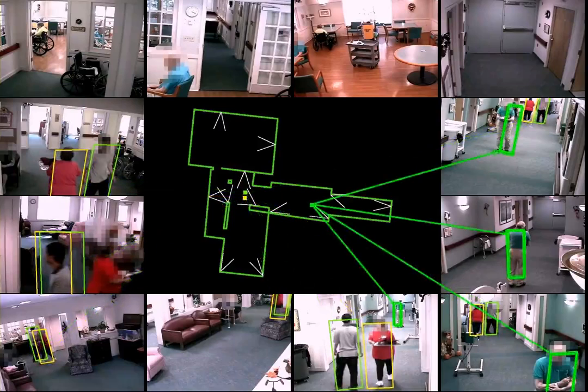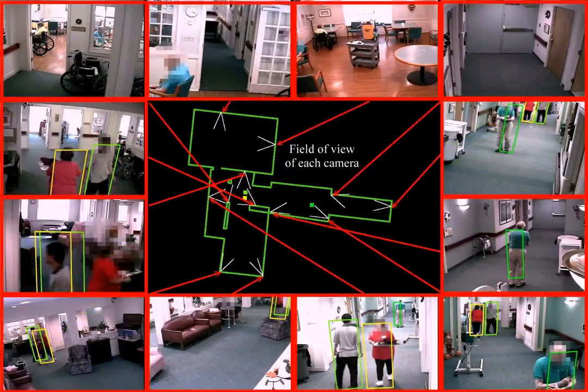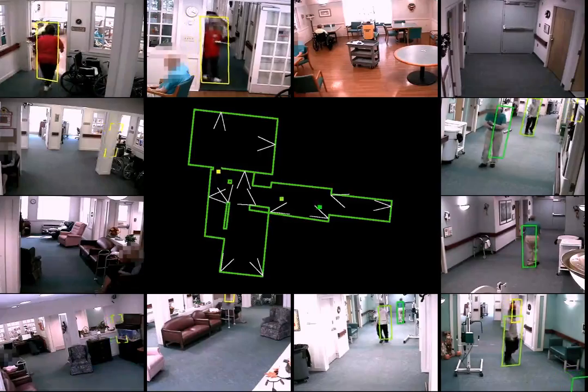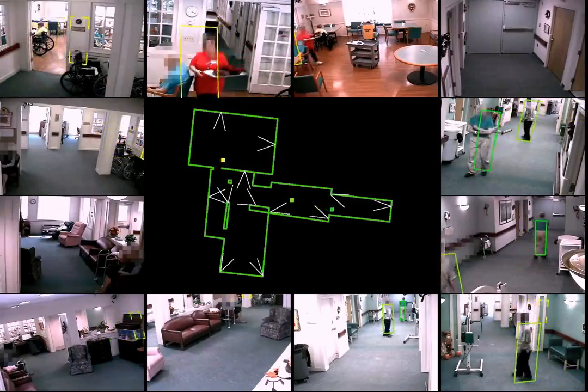The map in the middle shows not only the location of the walls, but also the location of each individual at each time instant. The surrounding videos correspond to each view of the camera.